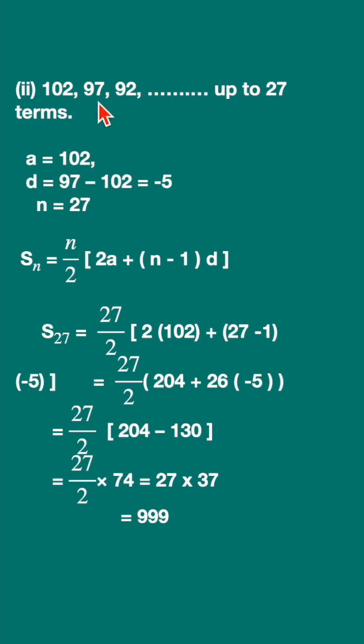This will be 97 minus 102, you get minus 5. n is the number of terms, that is 27. Write down the formula, substitute and evaluate. You will get that the sum of the first 27 terms is 999.